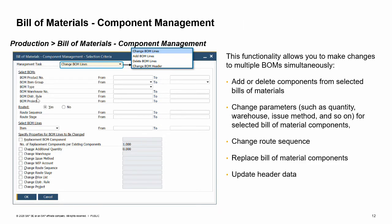The components management window allows mass changes in multiple existing bills of materials simultaneously. You can add new components to selected bills of materials, delete specific components from selected bills of materials, change parameters such as quantity, warehouse, and issue method for selected bill of material components, change route sequence, replace bill of material components, and update header data. Note that bill of material lines include items, resources, route stages, and text rows. Once you choose the relevant management task in the drop-down list, the fields to edit and type of possible changes are adjusted according to the selected action.